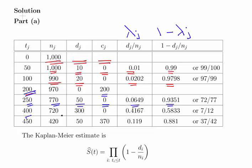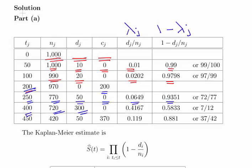The next period is 400 to 450 hours. We start with 720 bulbs and lose 300 in this period — which makes sense, as the longer we go the more we expect to break down. We don't lose any to censoring. The event probability is therefore 0.4167 and the survival probability is 0.5833.